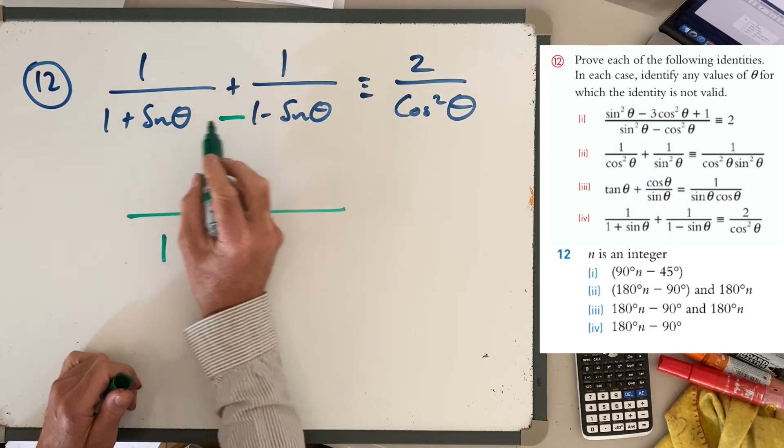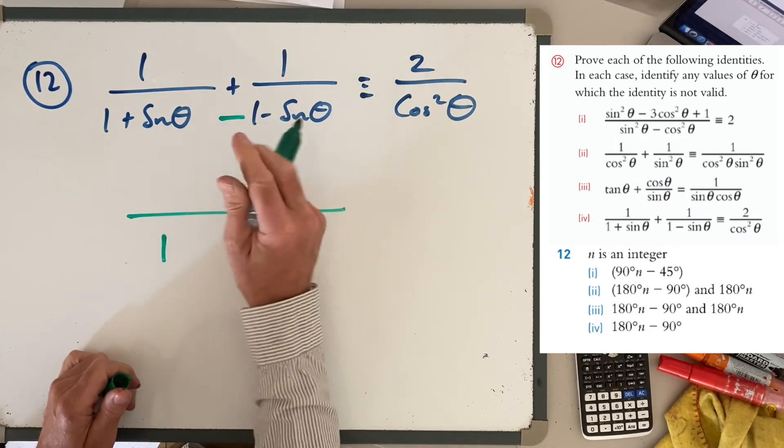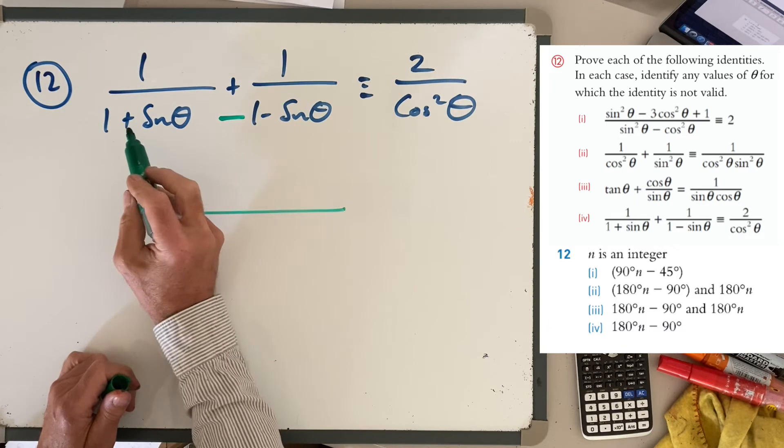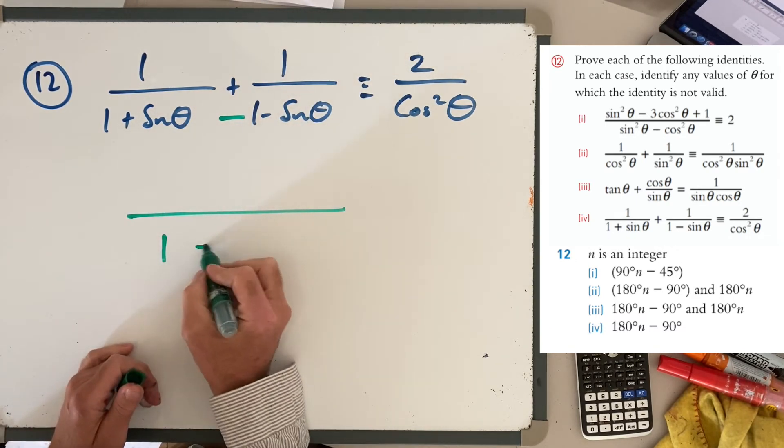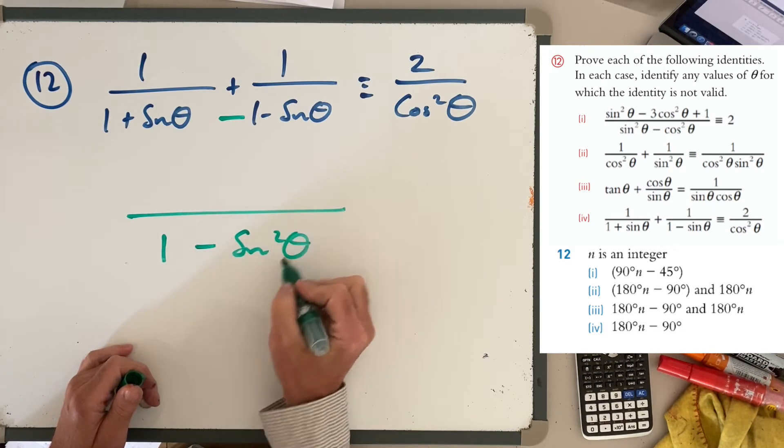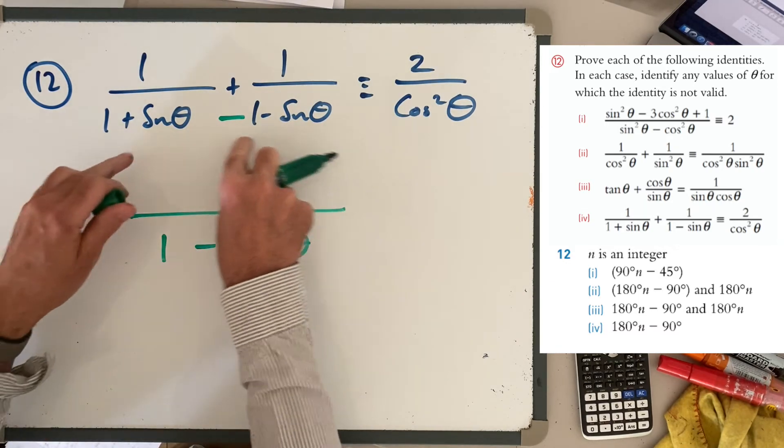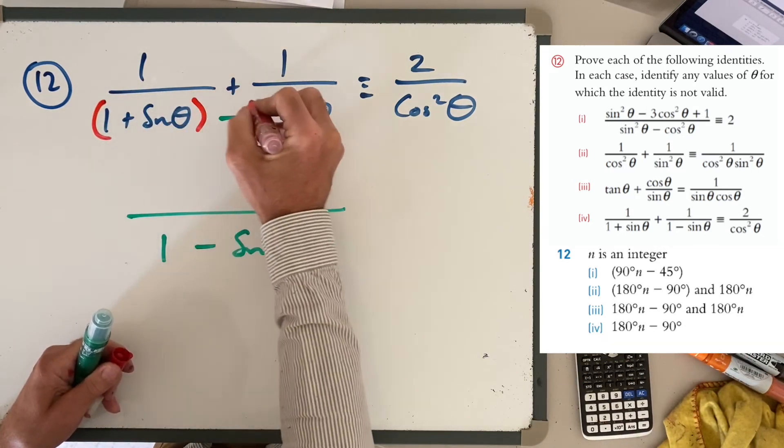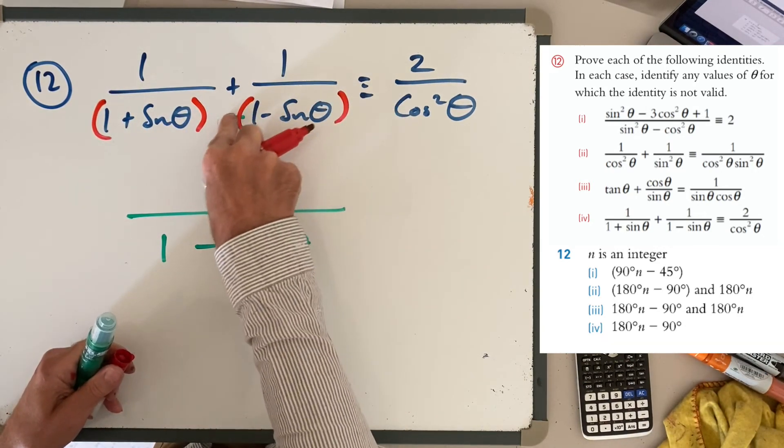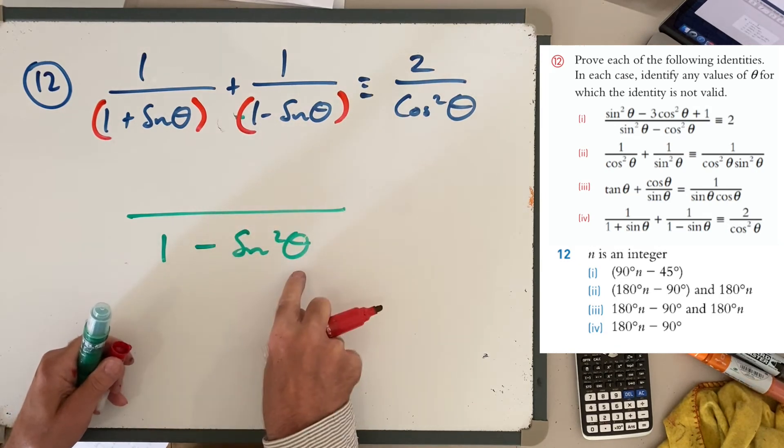You get sin θ times 1, which is sin θ, minus sin θ. So they cancel out, and you get minus sin² θ. You might want to practice that, multiplying these two out. You can practice that on the side if you wanted to.